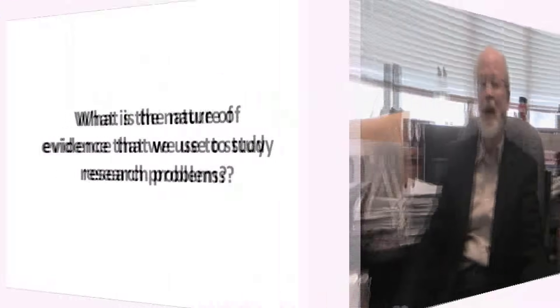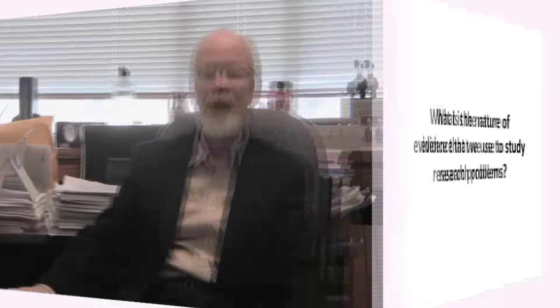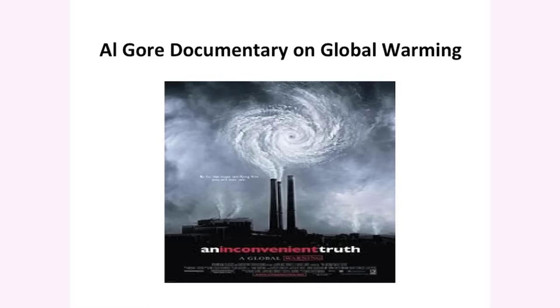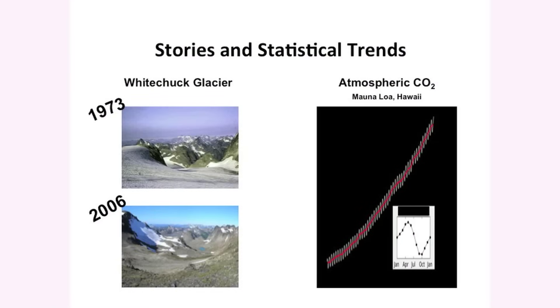We might start with the broader question of what kind of evidence do we use to study problems today in the social sciences, in education, in the health sciences. I think we can draw some clues from looking at recent documentaries. Take, for example, Al Gore's documentary, An Inconvenient Truth — a documentary about global warming. When you look at this documentary, it's a mixed methods documentary because Al Gore combines both the stories as well as statistical trends.